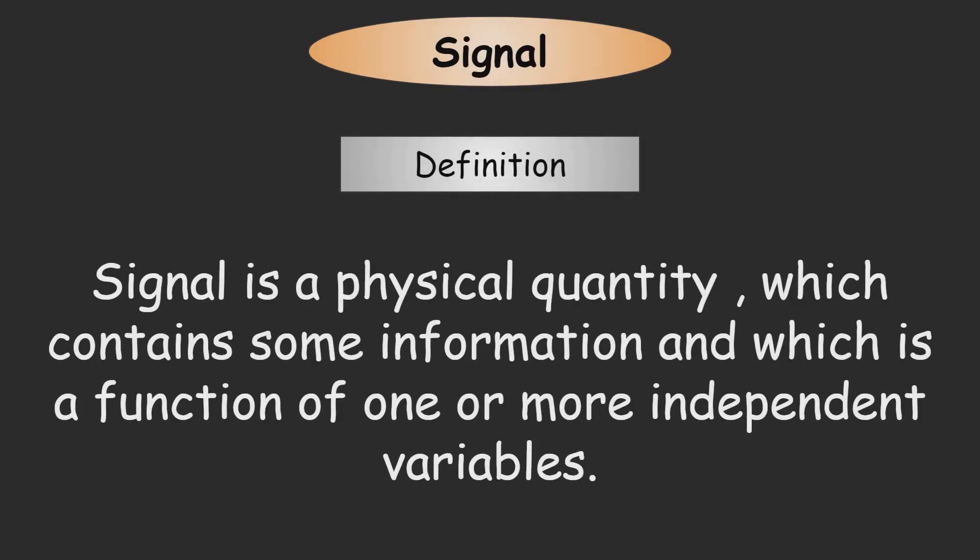First we will see the definition. Signal is a physical quantity which contains some information and which is a function of one or more independent variables.